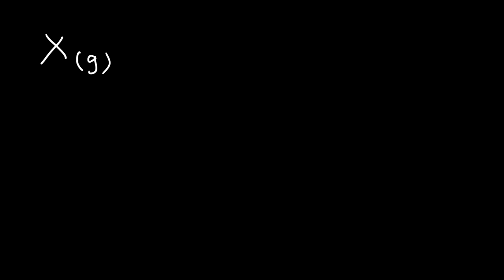In this video I'm going to talk about electron affinity. Electron affinity tells you the energy change that occurs when an electron is added to a gaseous atom. It's basically the opposite of ionization energy, which tells you the energy needed to ionize a gaseous atom — to remove an electron from it or from a gaseous ion.